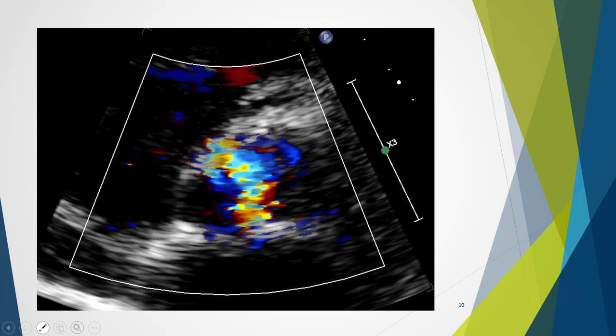Here we can see the typical cat's eye appearance when colour is applied — there is a vertical slit as blood moves through the orifice.